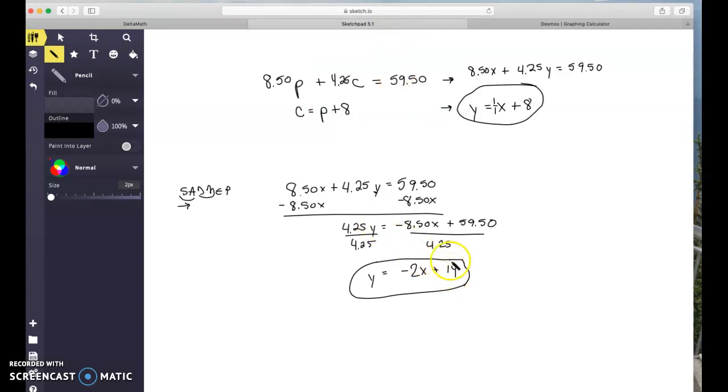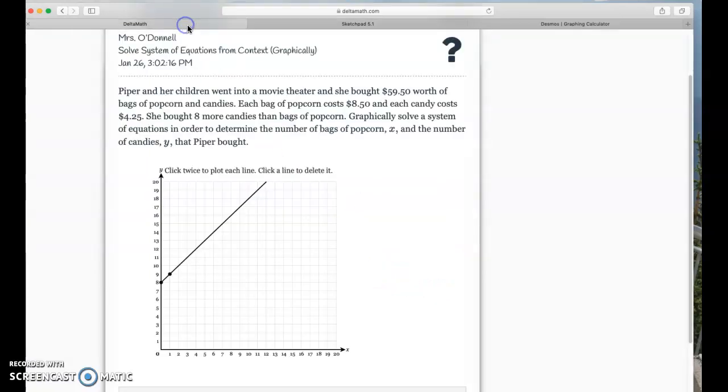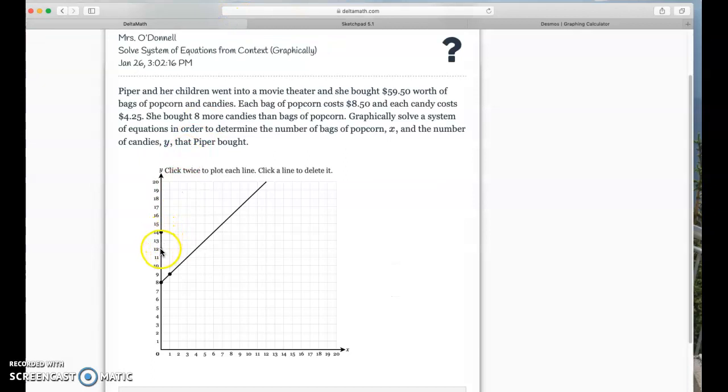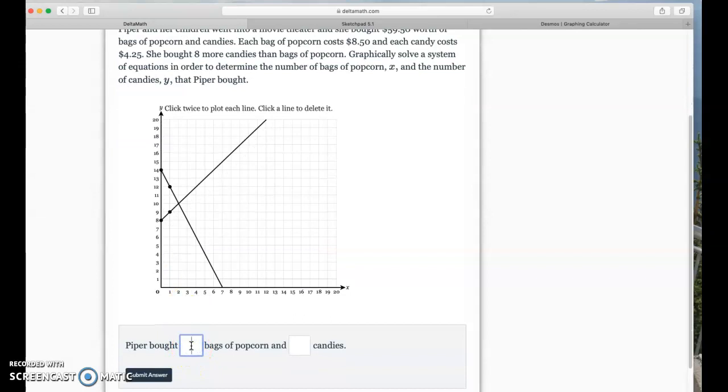Same thing, I'm going to put a point on 14 and I'm going to do rise over run to plot additional points. I'm going to put a point on 14 on my y-axis and my slope is down 2 over 1. So I'm going to go down 1, 2 over 1. Graphically solve this system of equations in order to determine the number of bags of popcorn and candies that she bought. So Piper bought two popcorns and 10 candies.